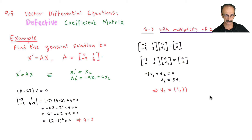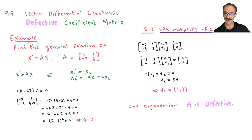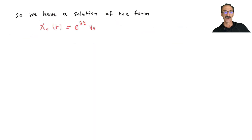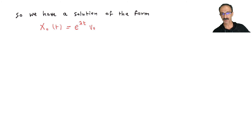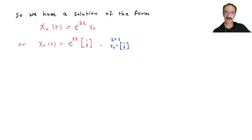This is the first time we see this — only one eigenvector, so A is defective. We have a first solution of the form x_sub_0 = e^(lambda*t) * v_sub_0. They call them x_sub_0 and x_sub_1 instead of x1 and x2 because they look different from the previous section. So x_sub_0 = e^(3t) times v_sub_0 = [1, 3].